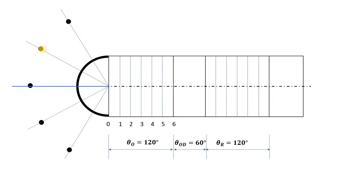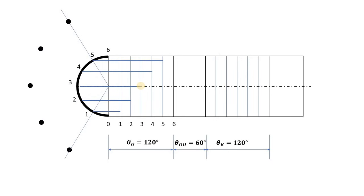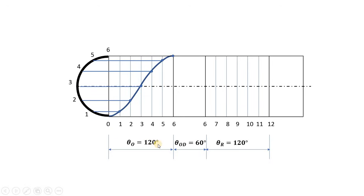Draw lines passing through the marked points and label them 1, 2, 3, 4, 5, and 6. Draw a horizontal line from point 1 until it intersects the vertical line from 1. Similarly draw horizontal lines from points 2 and 3 until they intersect their respective vertical lines, and so on for all points. Now draw a smooth curve passing through all these intersection points. This is the simple harmonic motion curve obtained for theta O equal to 120 degrees.